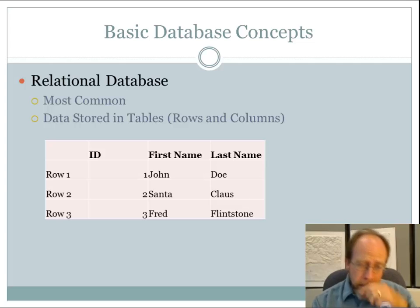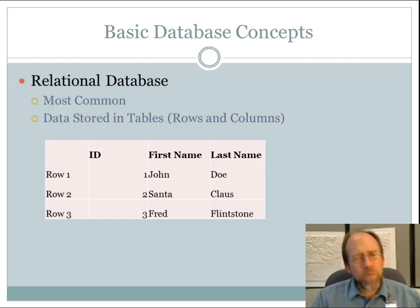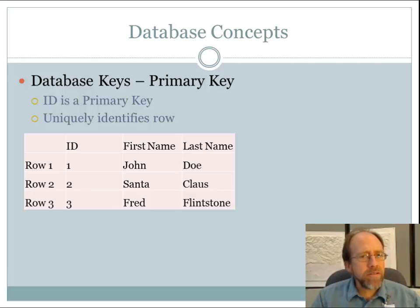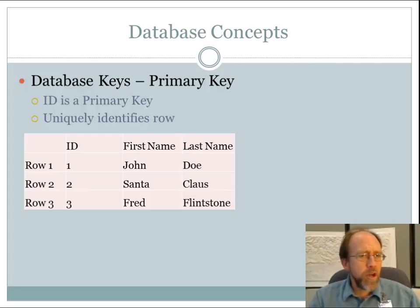Let's talk about relational databases — the most common type. It's a relatively simple concept: data is stored in tables, and tables are made up of rows and columns. What really makes it a relational database we'll cover in the next few slides. First, we have the concept of a key — a key is something that uniquely identifies the data in a row. The columns are the fields — first name and last name — that make up the data structure. The rows have a key, in this case an ID. Though you can have multiple people named John Doe, there's only going to be one John Doe with an ID of 1. That uniquely identifies the row — we call that a primary key.